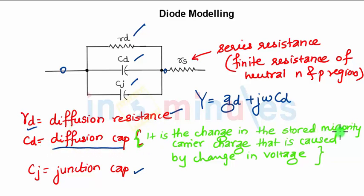It is the change in the stored minority carrier charge that is caused by the change in voltage. As you change the voltage, how much is the change in the minority carriers determines the diffusion capacitance, and this is how we are replacing the diode with the model.